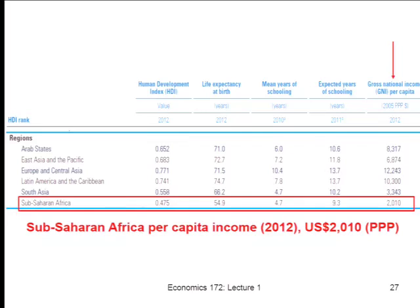What we have here are the major developing and middle-income regions of the world — six regions. There are the four we had before, plus the Arab states, which are basically the Middle East and North Africa, and Europe and Central Asia, which is really the former Soviet bloc and Eastern Europe. The only countries really excluded are Western European countries, some North American countries, and a couple of rich East Asian countries like Japan — the OECD countries. But this is the vast majority of the world's population.